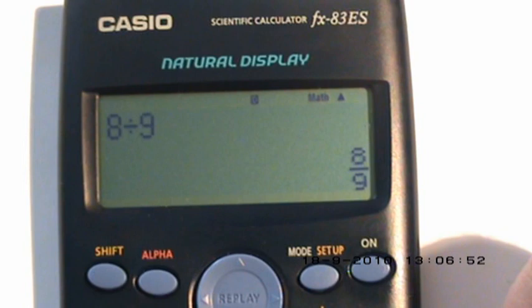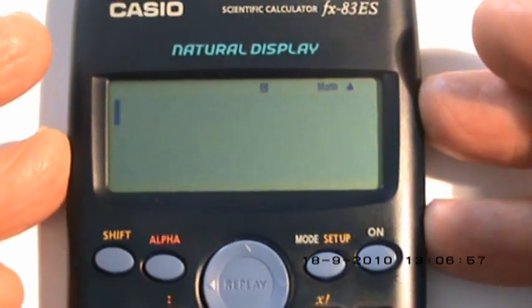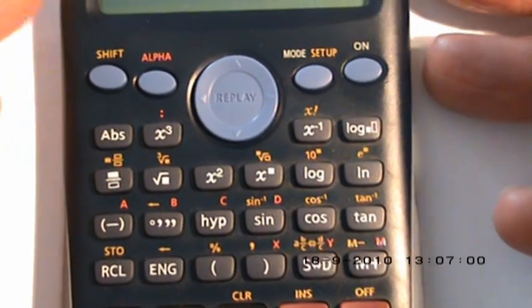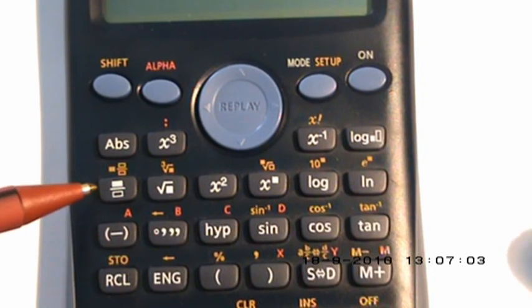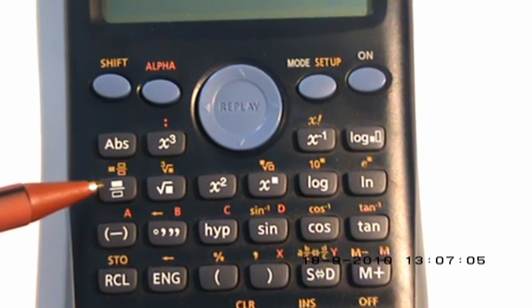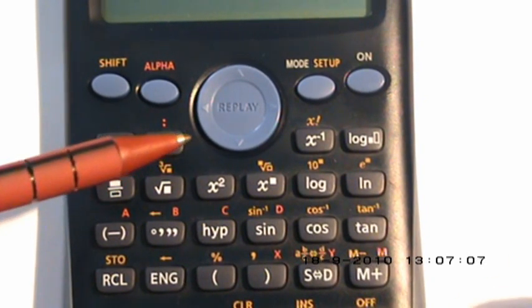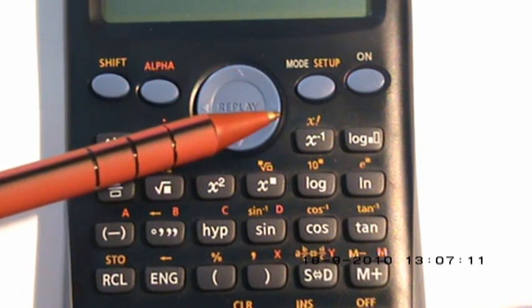A couple of important buttons you're going to be using are down here. The first one is the fraction button - it looks like a fraction, one number over the other. The next button is this toggle switch, which is an up, down, right, and left button.